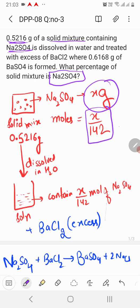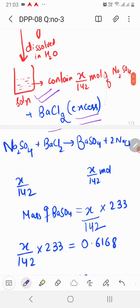This solid mixture is dissolved in water to get a solution which is then treated with BaCl2 in excess. It means that Na2SO4 will be your limiting reagent in this reaction.